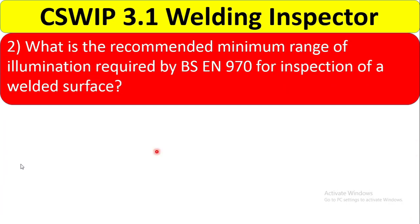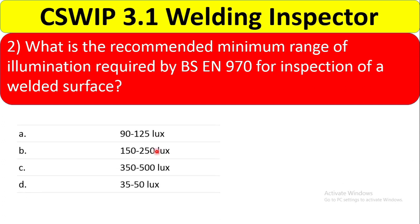Question 2: What is the recommended minimum range of illumination required by BS EN 970 for inspection of a welded surface? Illumination means how much light is required to check the surface to correctly identify defects. The options are: A) 90–125 lux, B) 150–250 lux, C) 350–500 lux, and D) 35–40 lux.